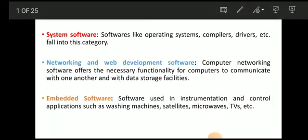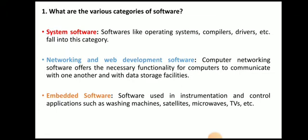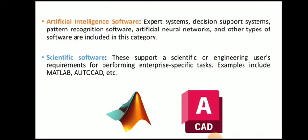The very first question: what are the various categories of software? There are total six categories of software — system software, networking and web development software, embedded software, artificial intelligence software, and scientific software.